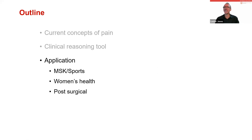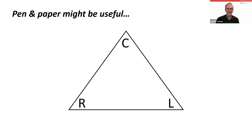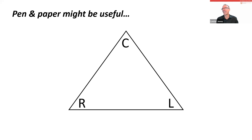I'm going to move on to some application now and give you a chance to work through things. Hopefully people have got pen and paper handy, or you can do this in your head. The pain and movement reasoning model can be represented as simply as a triangle — you can put a grid in it if you like. We'll go through a case and get a chance to plot your response.